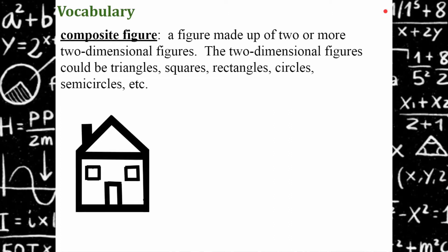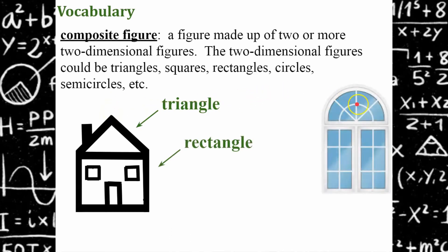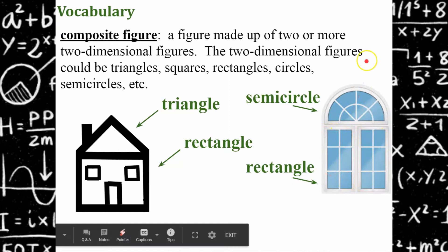Here's an example of a composite figure. A house is composed of this triangle and a rectangle. We also have this window. It's comprised of a semicircle and a rectangle. You can consider those two rectangles or one large rectangle.